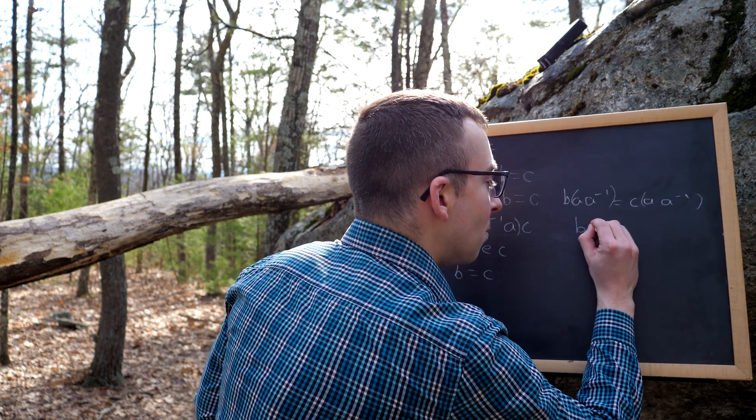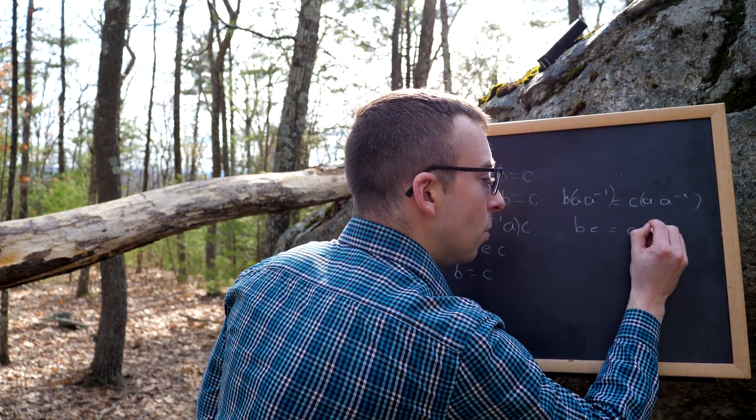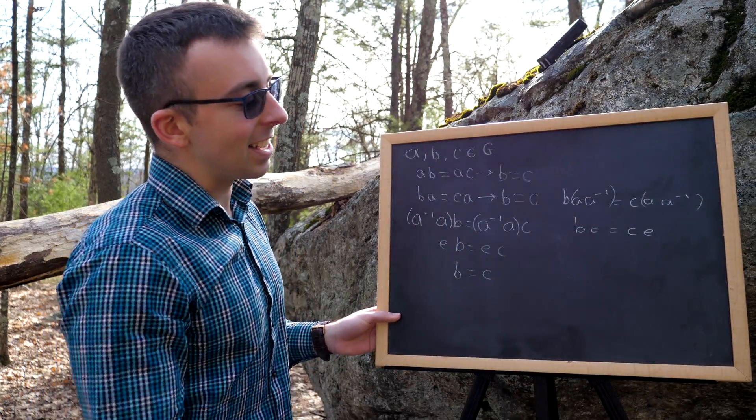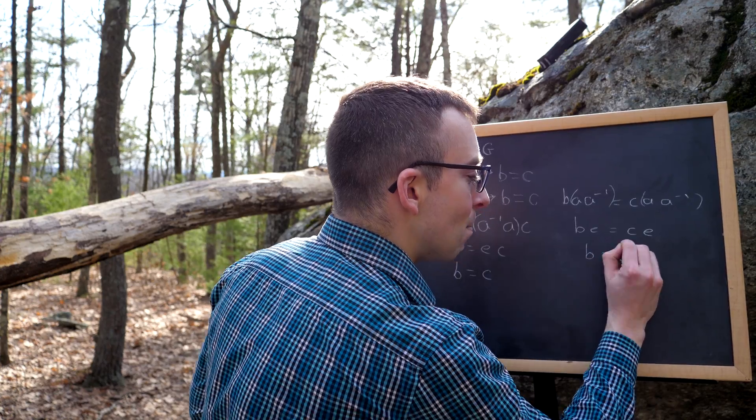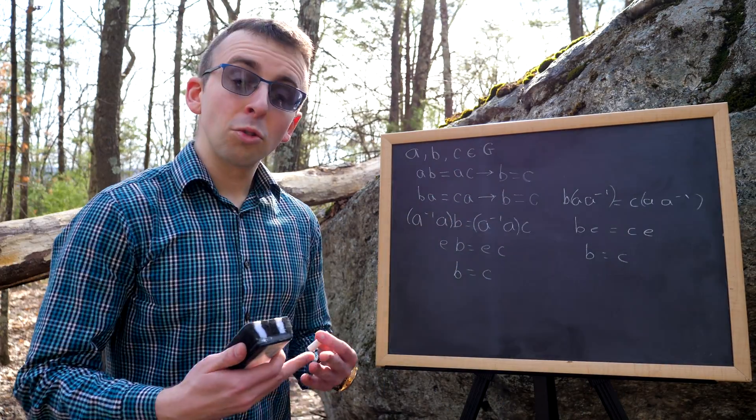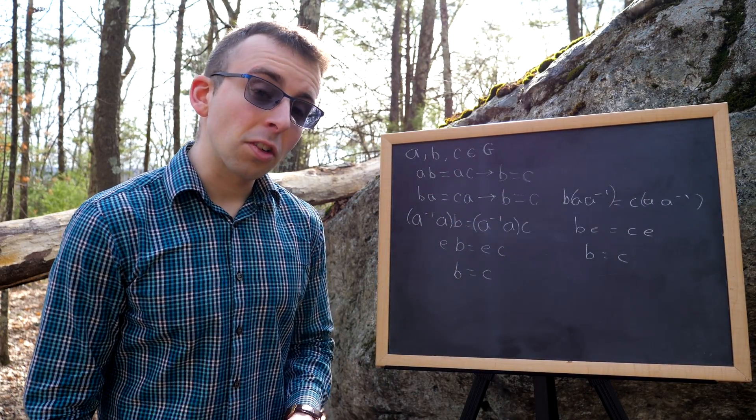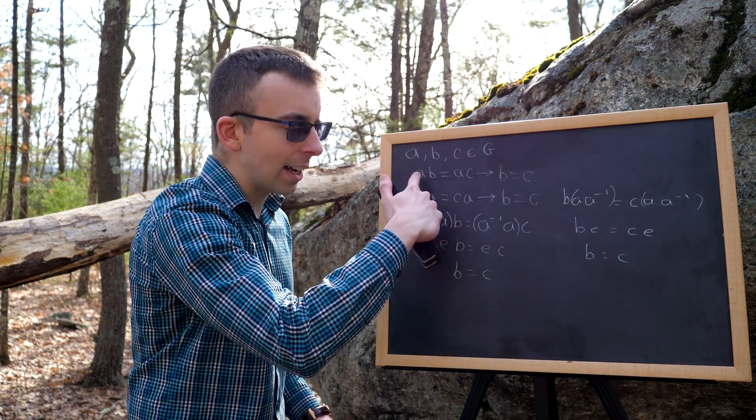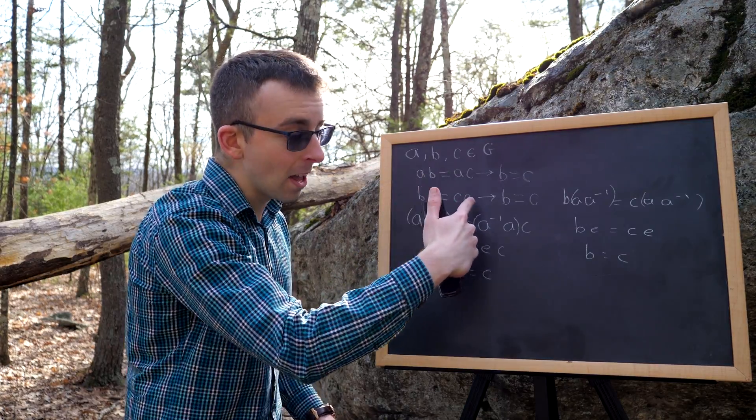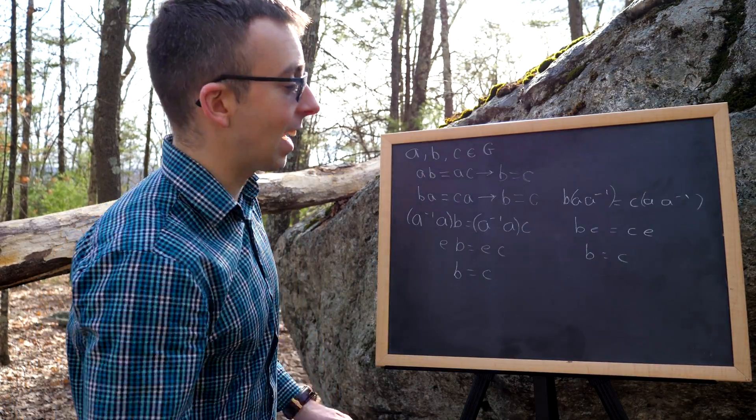and so we have that B times E, the identity, is equal to C times E, the identity, and then by definition of identity, we again have that B is equal to C. So now we know we can use the cancellation law for groups. If we have the same group element composed on the same side, on both sides of an equation, either on the left or on the right, we can cancel it out.